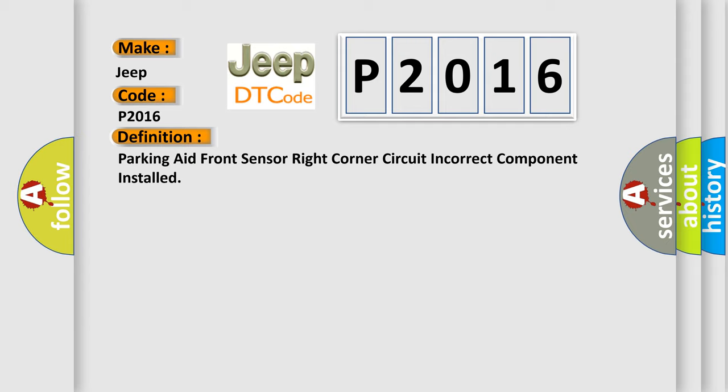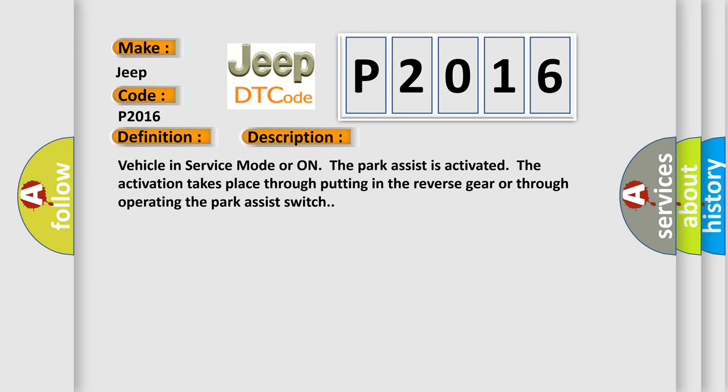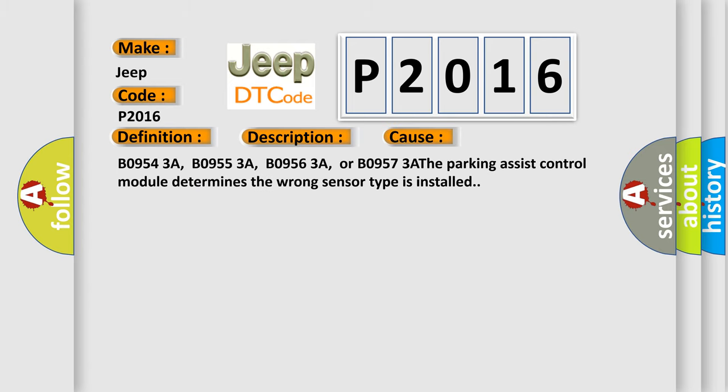Here is a short description of this DTC code. The vehicle is in service mode or the park assist is activated. The activation takes place through putting in the reverse gear or through operating the park assist switch. This diagnostic error occurs most often in these cases: B09543A, B09553A, B09563A, or B09573A — where the parking assist control module determines the wrong sensor type is installed.